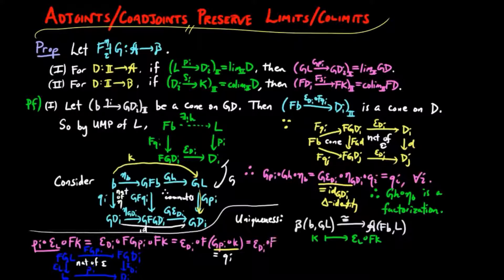But by the construction of h above, we see this is nothing but πi∘h. This holds for each i. So by the universal mapping property of L, h must be equal to εL∘Fk.